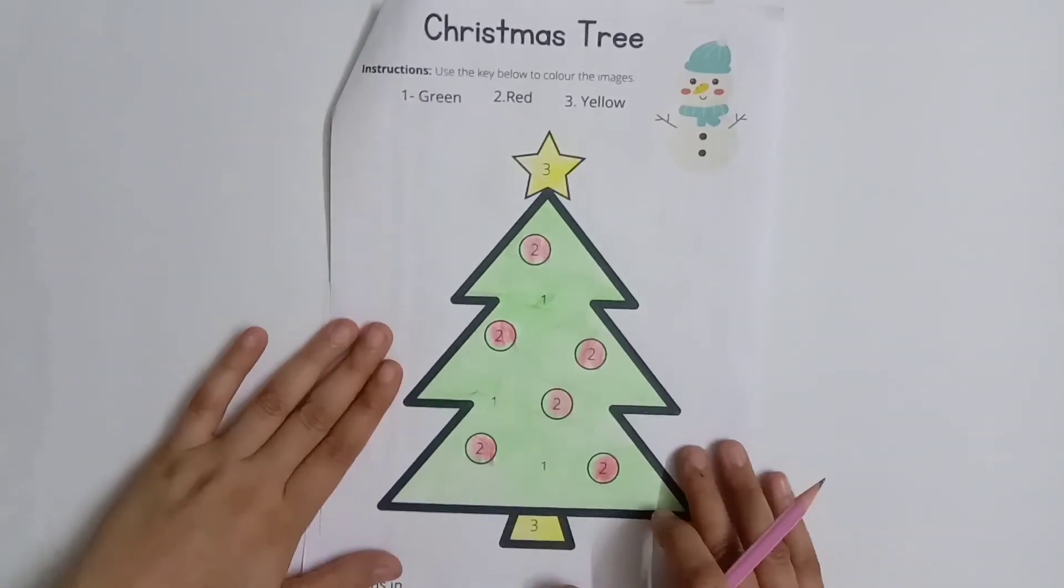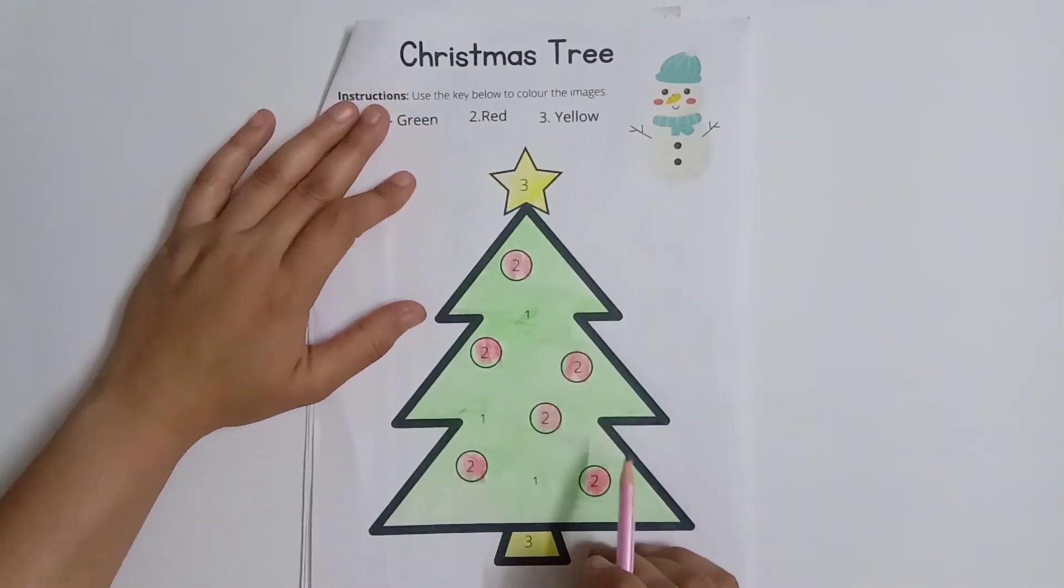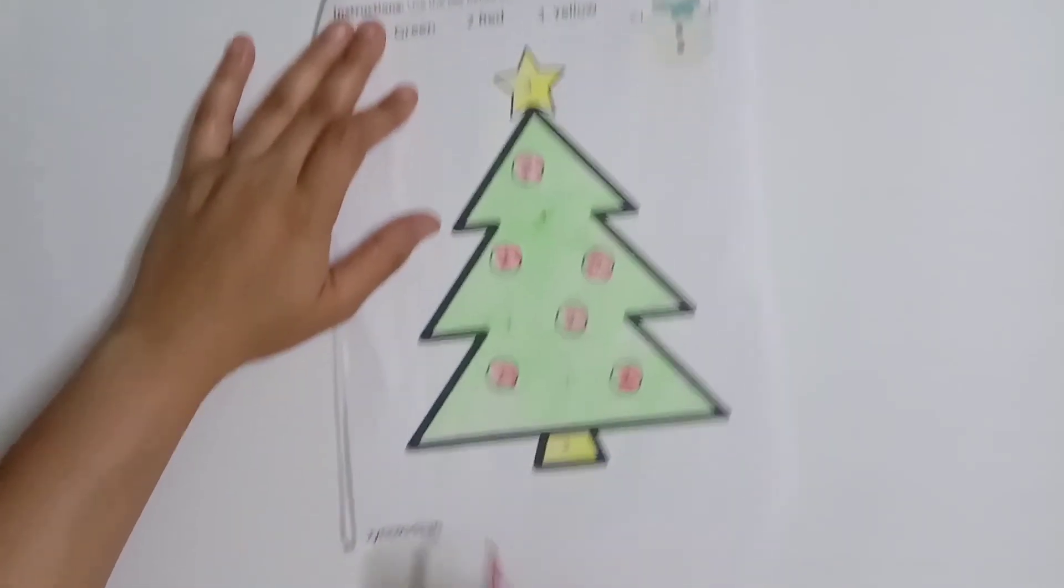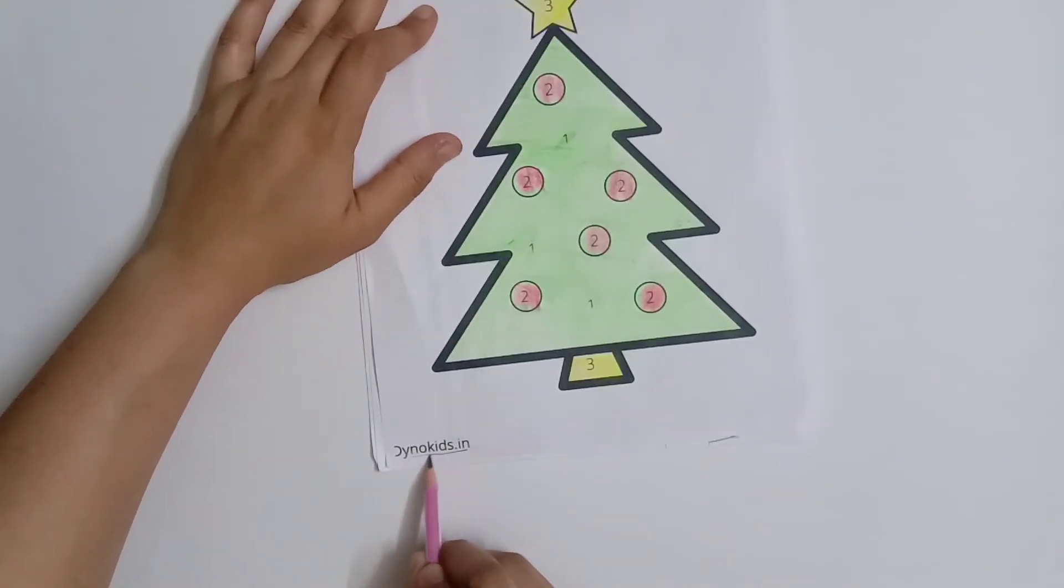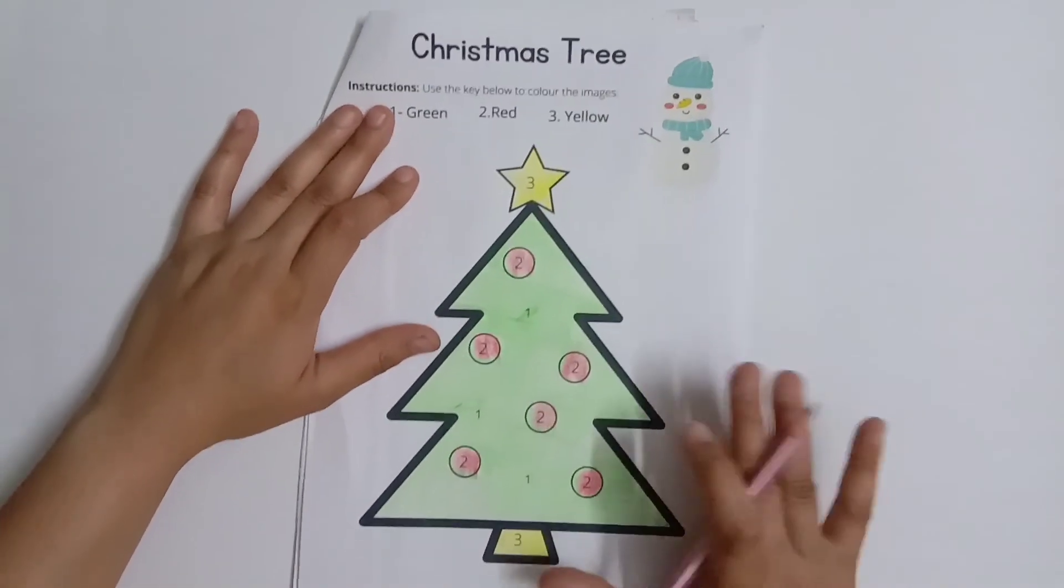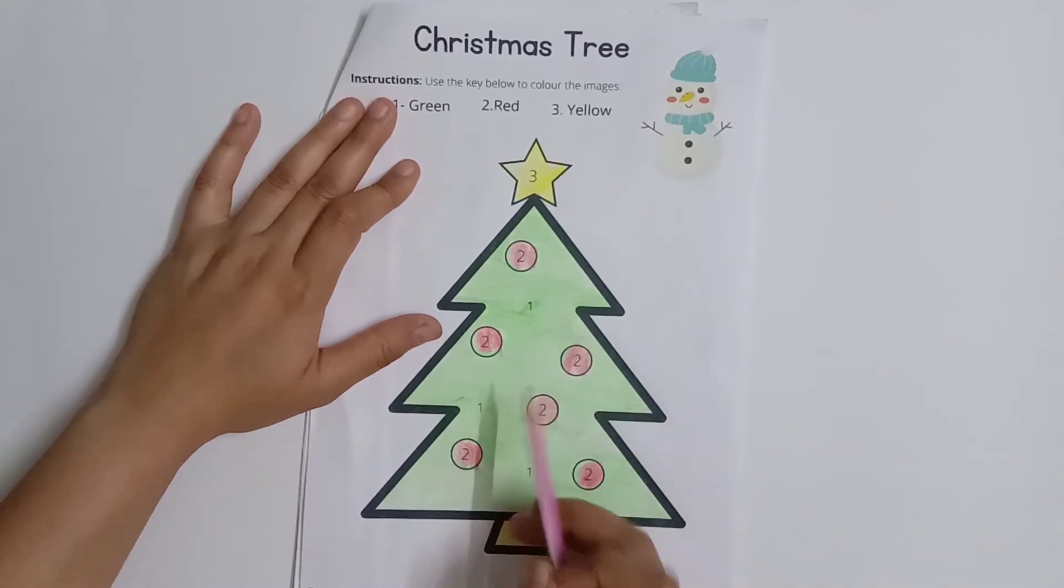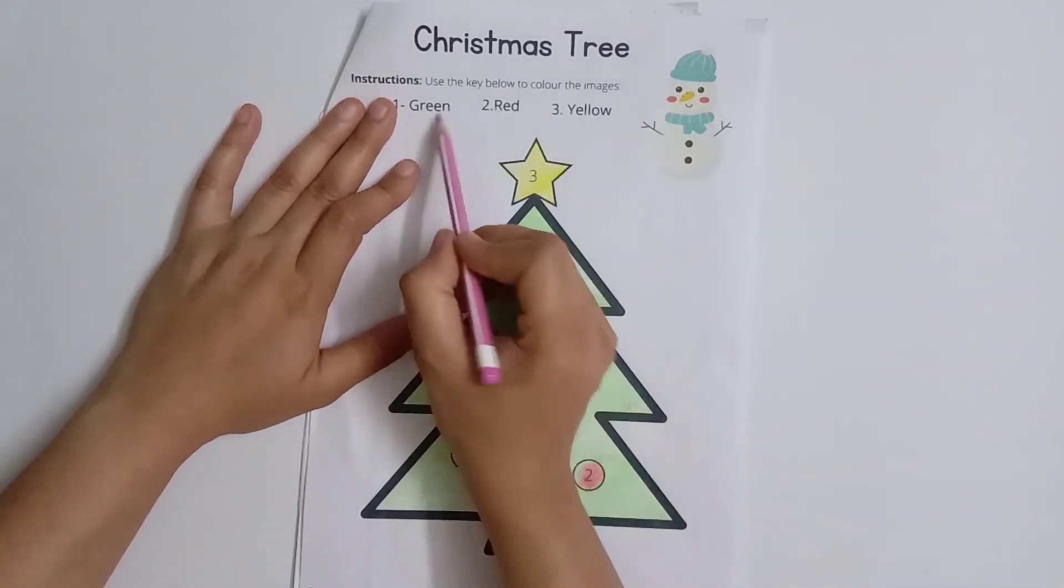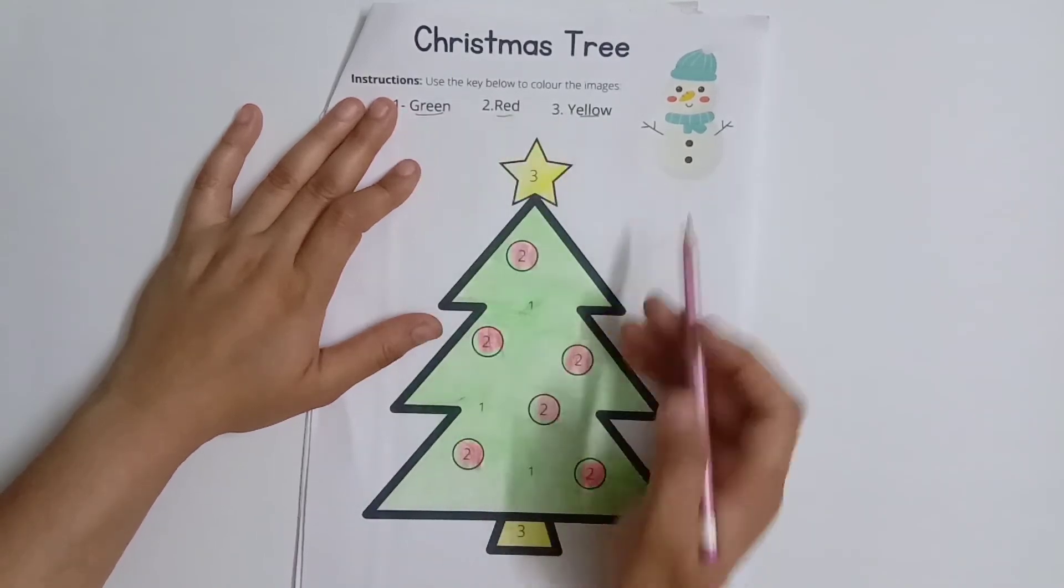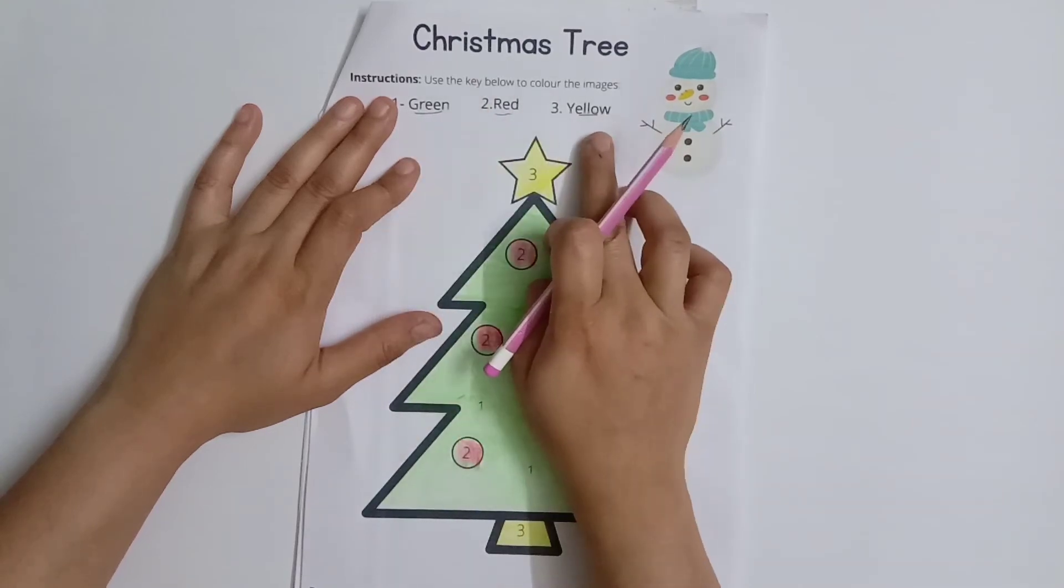After this, our next worksheet is a Christmas tree worksheet. This is a color-by-number activity available on Dino Kids. If you need this print, you can tell me in the comment section. Here I have some numbers in this Christmas tree - one is green, two is red, and three is yellow, so accordingly we will color it.